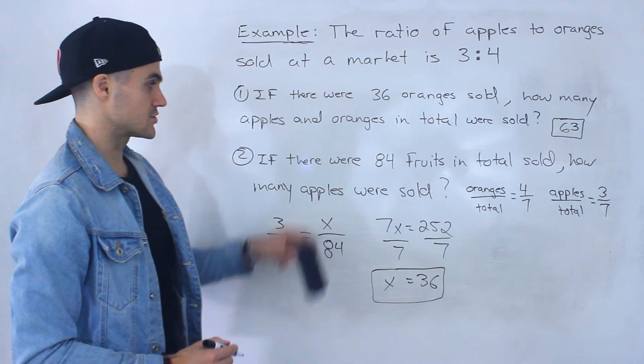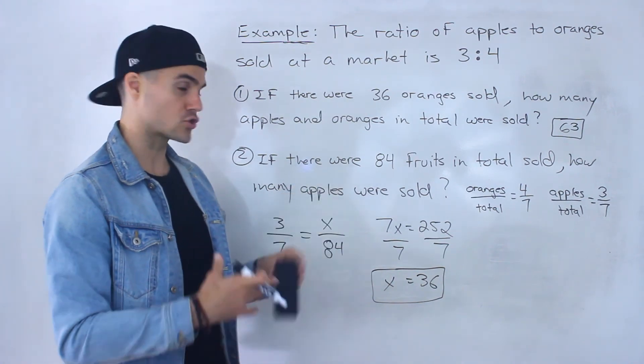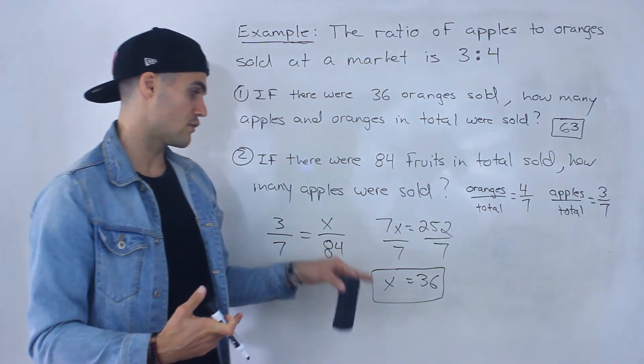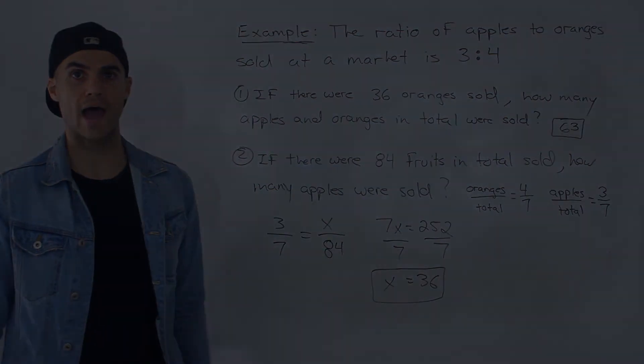All right, so that is the answer to number two. If 84 fruits in total were sold, then there were 36 apples sold.